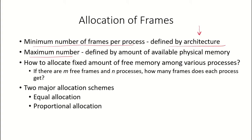What is the maximum number of frames that can be allocated to a process? This is defined by the amount of available physical memory for the user. If there are X total frames in physical memory and no other process, then the maximum can be all available frames. If there is a fixed amount of free memory — a fixed number of free frames — the question is how to allocate these frames among various processes.